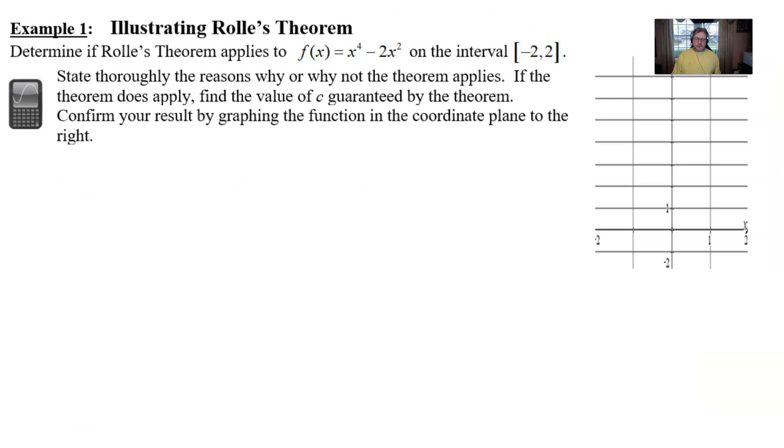So why don't we take a look at our first full example that illustrates Rolle's theorem here. We're asked to determine if Rolle's theorem applies to this function f(x) = x^4 - 2x^2 on the interval [-2,2]. Now we have to state thoroughly the reasons why or why not the theorem applies, and if the theorem does apply, we have to go and find that value of c that's guaranteed by the theorem. We'll confirm our results by graphing with the graphing calculator after the fact.